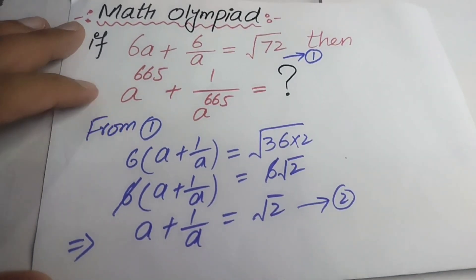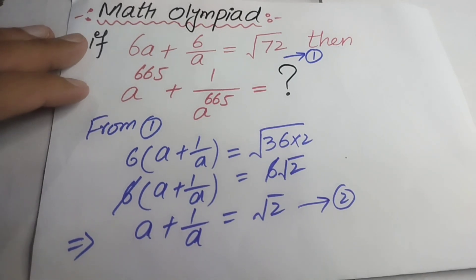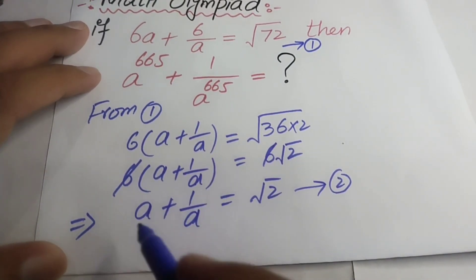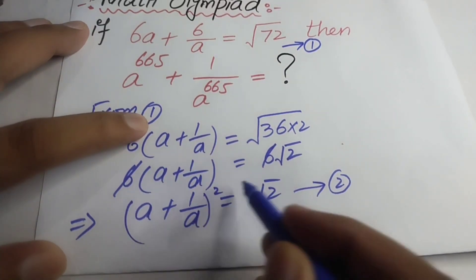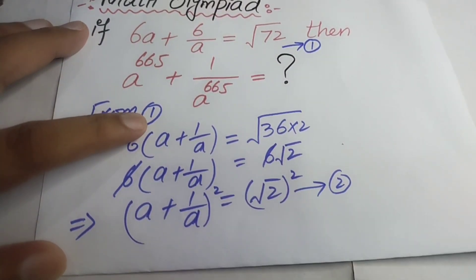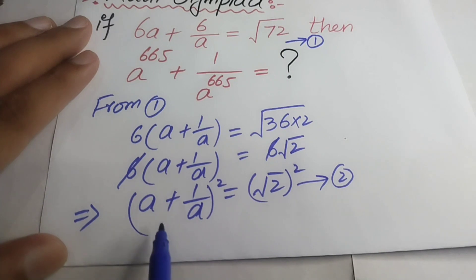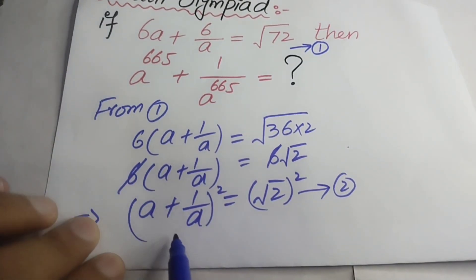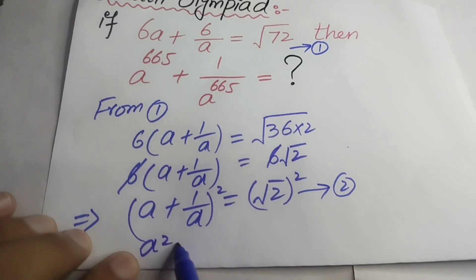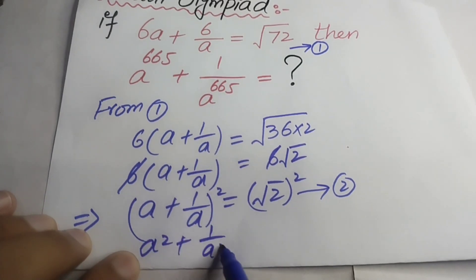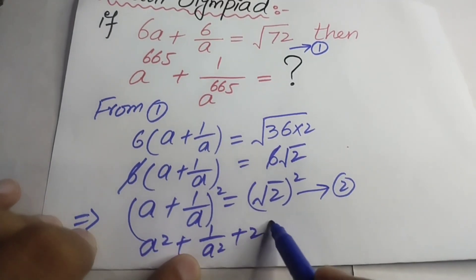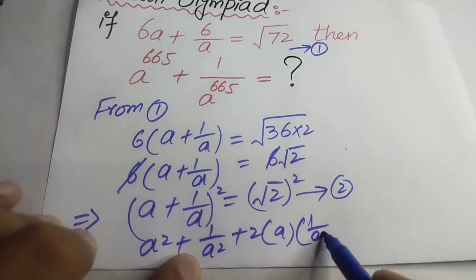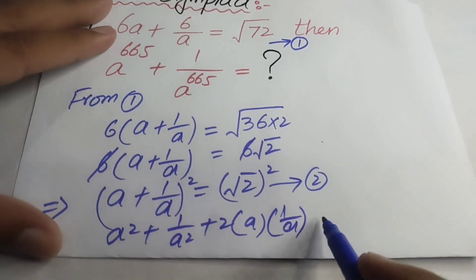After that, we get the value of a + 1/a is equal to √2. We can assign this as equation number 2. Now, taking the square of both sides of this equation. We know that (a + b)² = a² + b² + 2ab.